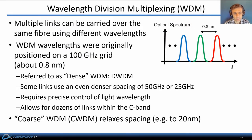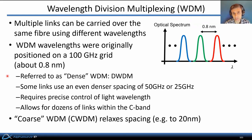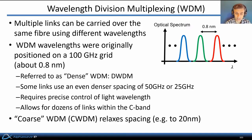Wavelength division multiplexing, or WDM, is a technique that allows multiple links to be carried over the same fiber using different wavelengths of light. WDM wavelengths were originally positioned on a 100 gigahertz grid, corresponding to about 0.8 nanometers difference in optical wavelength — now referred to as dense WDM or DWDM. Some links use even denser spacing of 50 gigahertz or 25 gigahertz, requiring very precise wavelength control, but allowing dozens of links to be carried within the same optical fiber. More recently, coarse WDM (CWDM) relaxes the spacing between optical carriers to 20 nanometers.